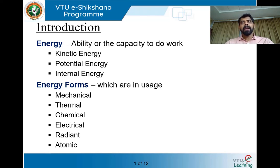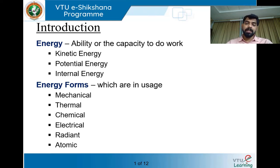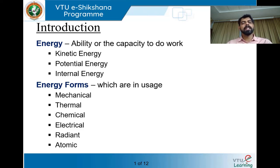When it comes to usage, we use energy in various forms — mechanical energy, thermal energy, chemical energy, electrical energy, radiant energy, and atomic energy. We use energy in different forms in our day-to-day life. This covers the definition, the types of energy possessed by a system or body, and the various forms of energy used in daily life.